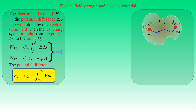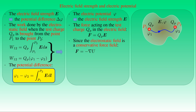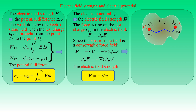Conversely, if φ is known at every point, we can determine E. Since the electrostatic field is conservative, the force F = QP·E equals the negative gradient of potential energy QP·φ. Therefore, E equals the negative gradient of φ: E = −∇φ. This equation is coordinate-free; we choose a coordinate system when computing the negative gradient.